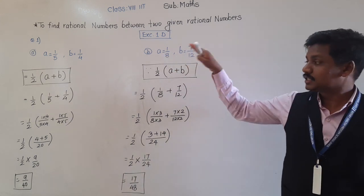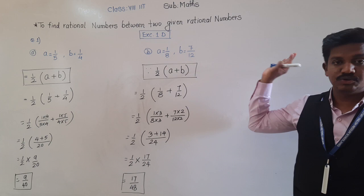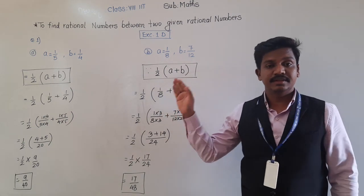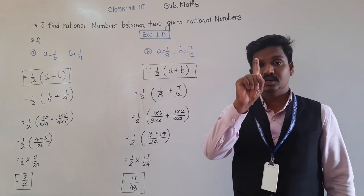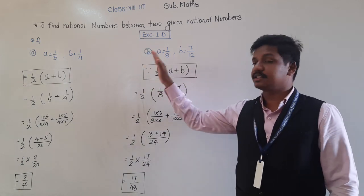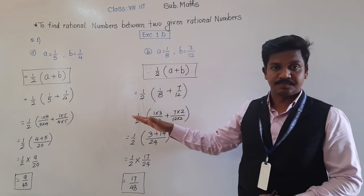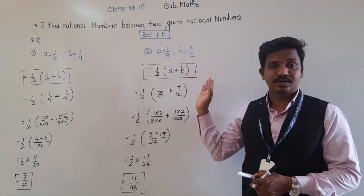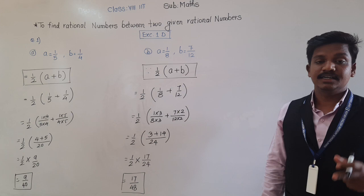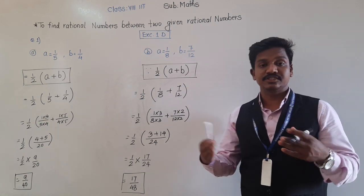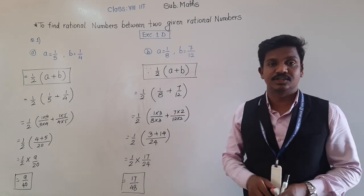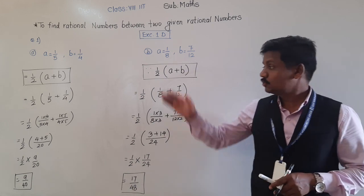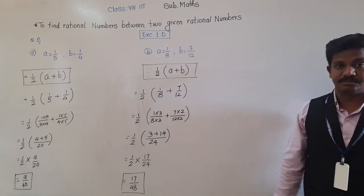In the first question there are two more examples you have to solve. This is one method to use when asked to find only one rational number. Pause this video, write these two examples, solve the remaining ones, and then we will see how to find many rational numbers between two given rationals.